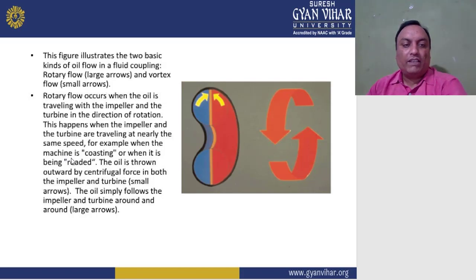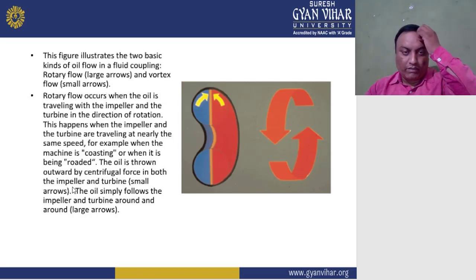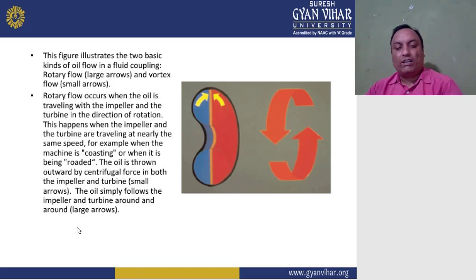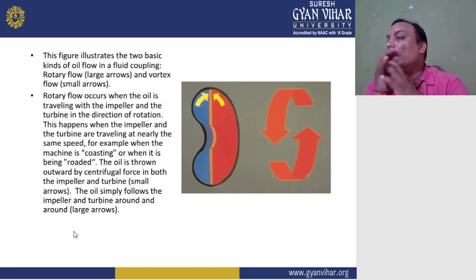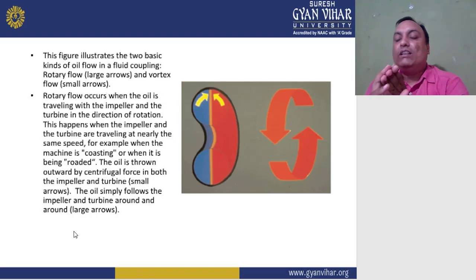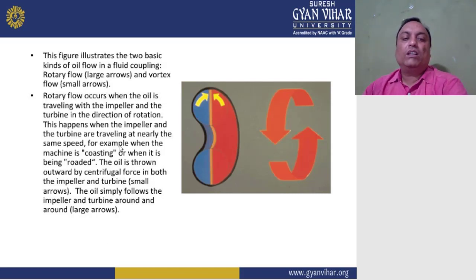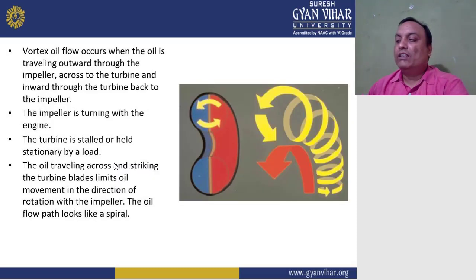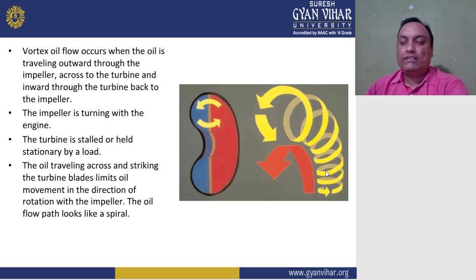When the machine is coasting, the oil is thrown outward by centrifugal force in both the impeller and turbine, creating a rotary flow. Both units rotate at the same speed without creating vibration or noise, and no friction is produced because no metal gear-type assembly is used to transmit power. This creates a spiral-type rotation throughout the radial length.